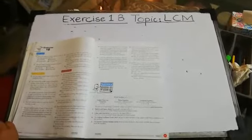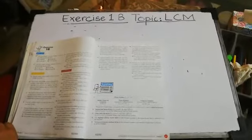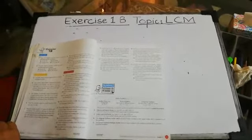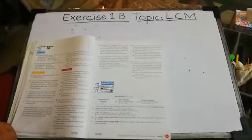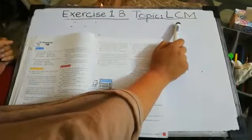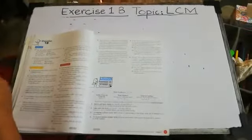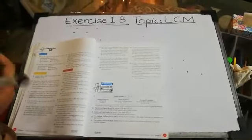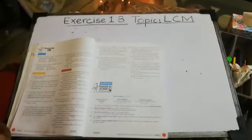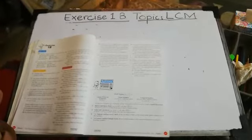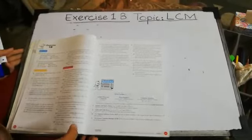Asalaamu alaikum students. Yesterday we covered HCF, that is Highest Common Factors, and I hope you all have completed the work I gave you yesterday. So today the topic we are going to start is LCM, that means the Lowest Common Multiple. We will make the factors and find the common factors, but this is a little bit different from HCF and a little bit tricky. I'm going to explain this and I hope you will understand and be able to complete your work inshallah.